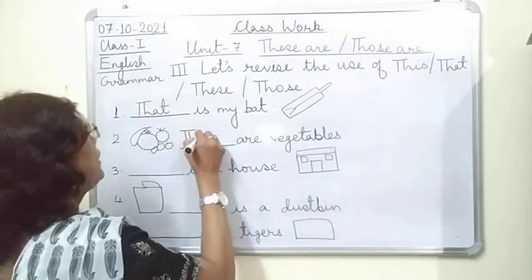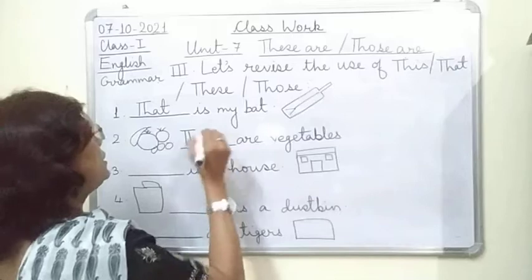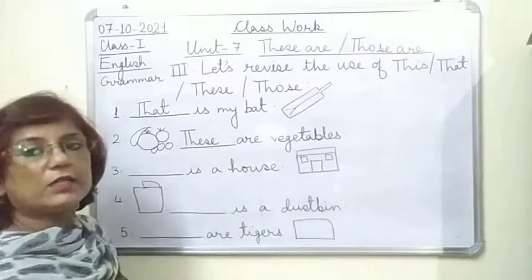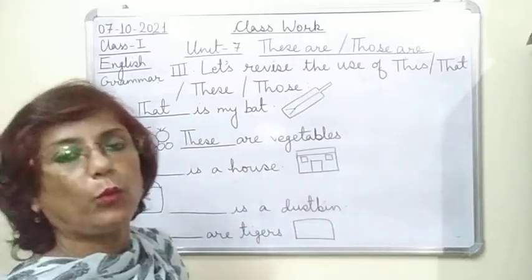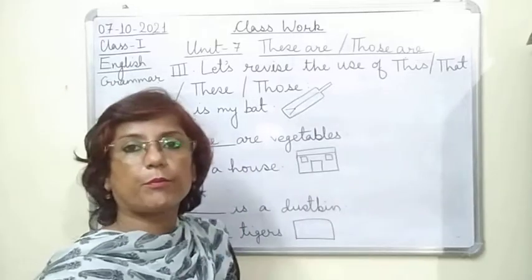For the vegetables picture, the sentence is in the beginning and the picture comes after, and vegetables is plural. So the answer is: These are vegetables.